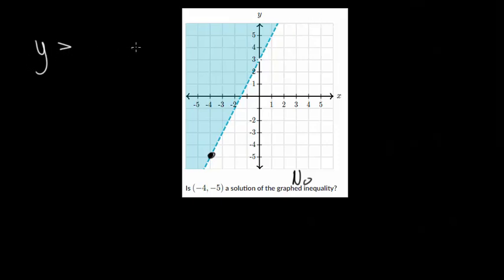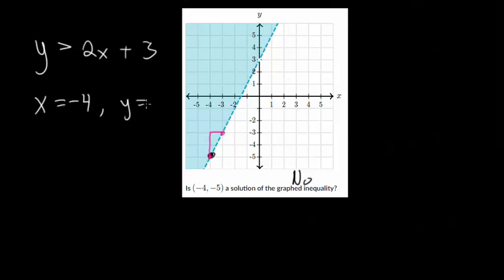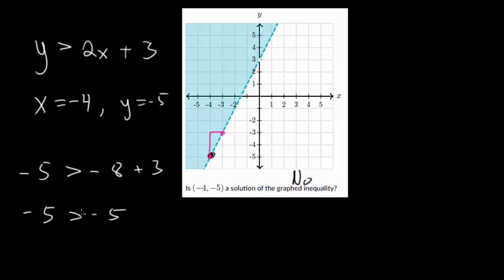So y is greater than, with y-intercept 3. The slope — comparing two points — goes up 2 over 1, so slope = 2. Plugging in our point where x = -4 and y = -5, we have -5 > 2(-4) + 3, which is -8 + 3 = -5. So we get -5 > -5. Obviously this isn't true, since -5 and -5 are equal — it can't be bigger than itself. So this doesn't make sense, which is why this is not a solution.